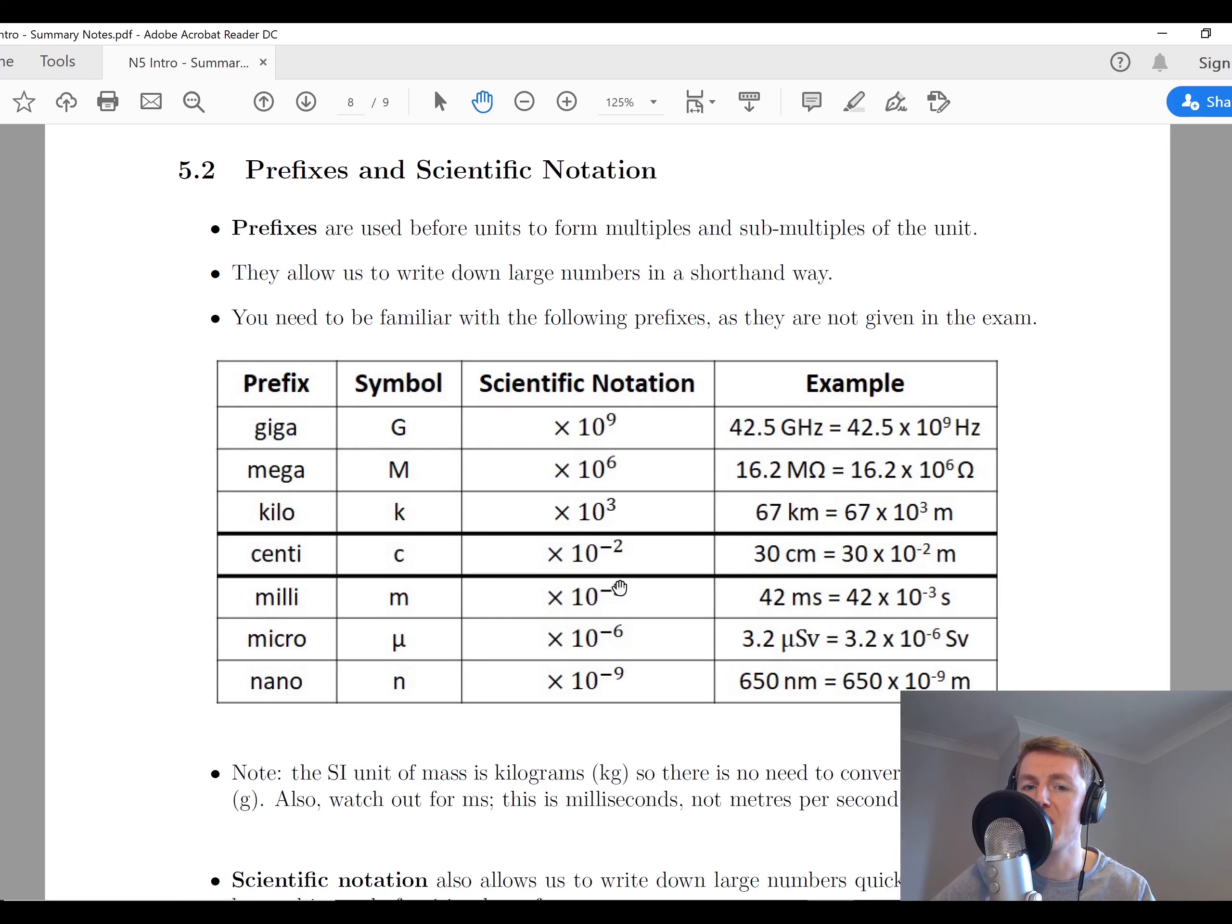If we go down the way, we've got 10 to the minus 3, 10 to the minus 6, and 10 to the minus 9. So it's worth remembering these in their patterns of 3, 6, 9, and minus 3, minus 6, minus 9. You need to be able to recognize that kilo, this symbol k, means times 10 to the 3. For example, 67 kilometers is 67 times 10 to the 3 meters.